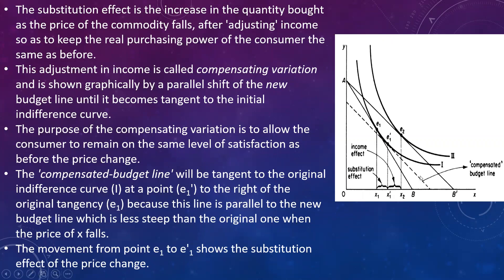You can see here: this dotted line is the compensated budget line. It is parallel to the new budget line AB' and tangent to the previous indifference curve. The compensated budget line will be tangent to the original indifference curve at point E1', because this is a parallel line to the new budget line which is less steep than the original one. The movement from E1 to E1' shows the substitution effect of price change.